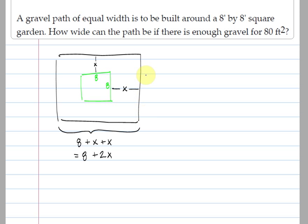Now let's look at the width of this whole figure, and it's kind of the same idea. The width of the whole figure is equal to the width of the garden, which is 8, plus the width of the path on one side, which is x, plus the width of the path on the other side, which is x. Again, that boils down to 8 plus 2x.